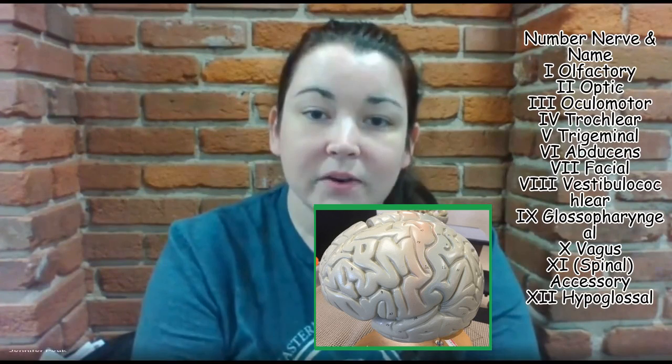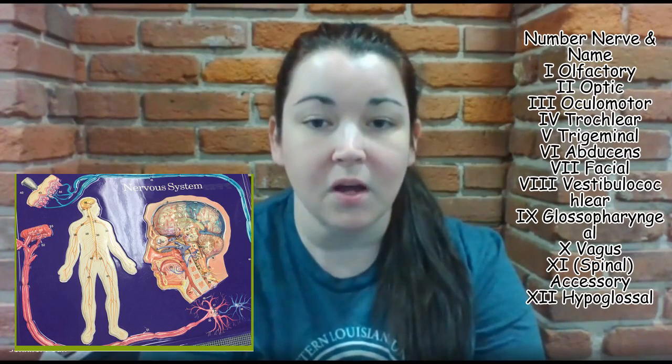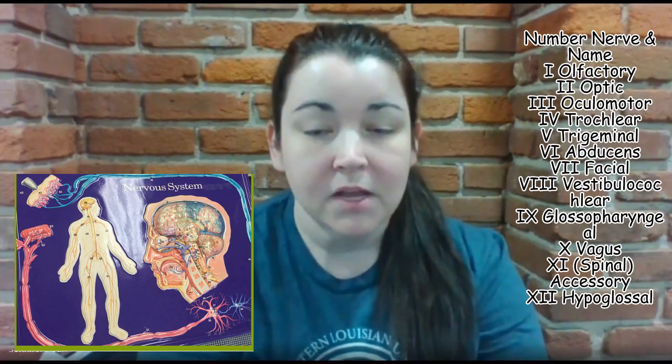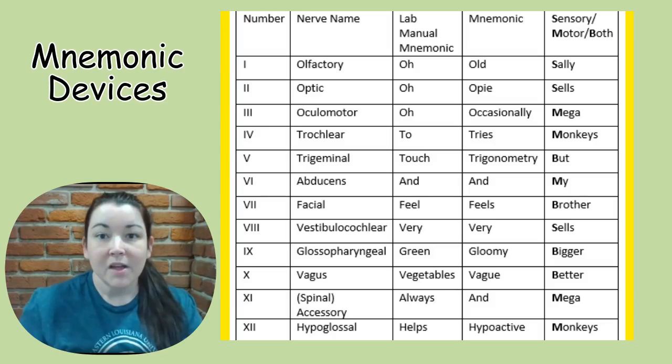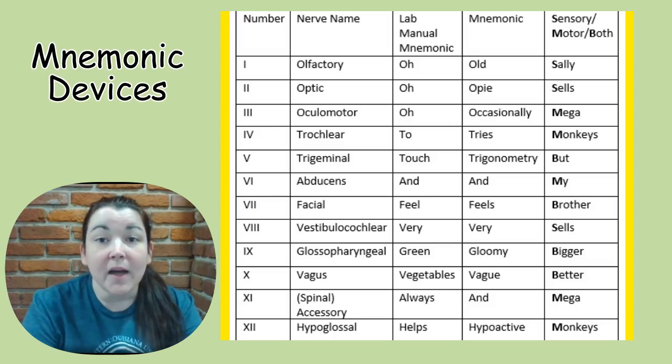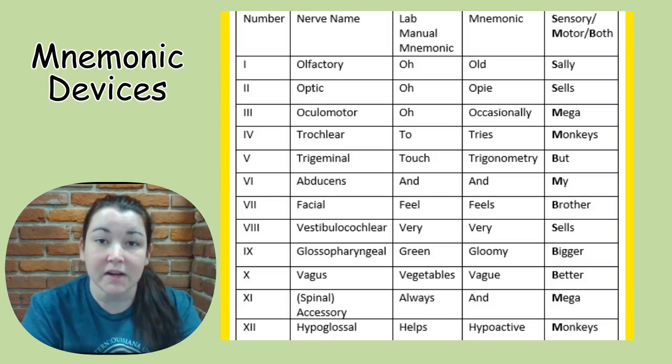Your brain model has the cranial nerves identified, along with your nervous system purple model. You can find the cranial nerves on the brain model and on the purple nervous model we have in lab. You'll also see some cranial nerves on your ear model and eye model — those are the ones that will show up on the final exam. Before we begin, let's talk about the mnemonic devices for cranial nerves.